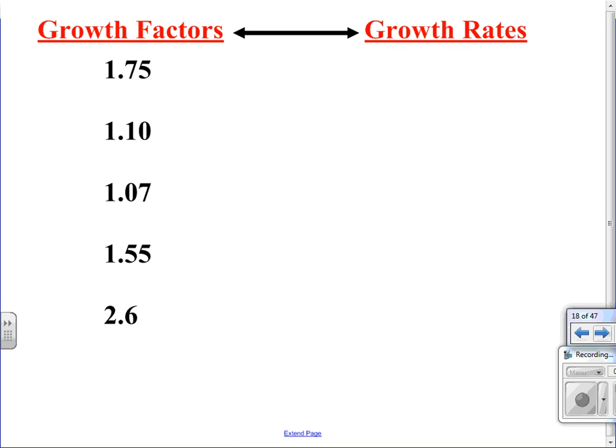Here's a few more examples that we can try. We'll start with the growth factor of 1 and 75 hundredths. Again, remember what this means. We're taking the whole, or 100%, plus another 75%. The first thing we need to do is to multiply 1 and 75 hundredths by 100. We multiply it by 100 to convert it to a percent. So 1 and 75 hundredths is equivalent to 175%.